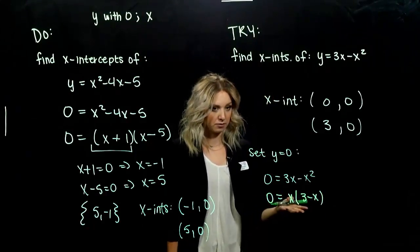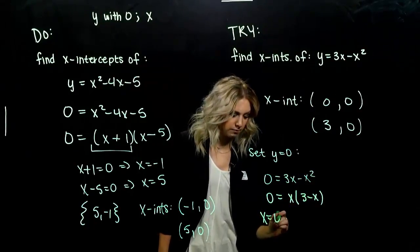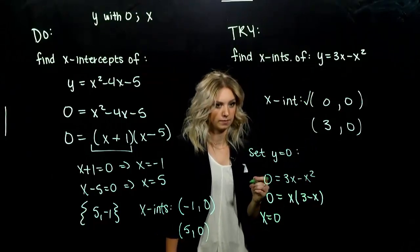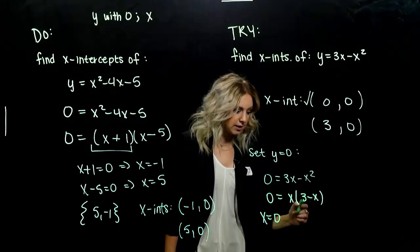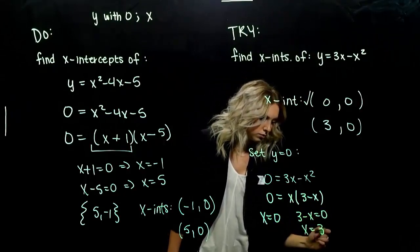So what does that mean for our values that make it true? First chunk is equal to 0. Figured out the first one. And the second one, if that chunk is equal to 0, x is equal to 3.